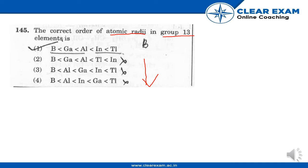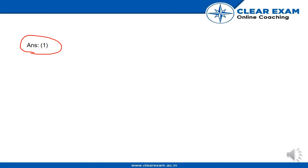Thus, the increasing order of atomic radii in Group 13 elements is: B < Ga < Al < In < Tl. As we move down the group, atomic radii increase in the boron family. The correct option is option number 1, which gives the correct increasing order of atomic radii of the Group 13 family. Thank you.